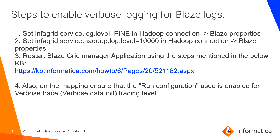We have to set two properties to enable verbose logging. One is infagrid.service.log.level equal to fine. Another one is infagrid.service.hadoop.log.level equal to 10,000 in the Hadoop connection blaze properties section. We also have to enable verbose init tracing in the run configuration for the mapping.